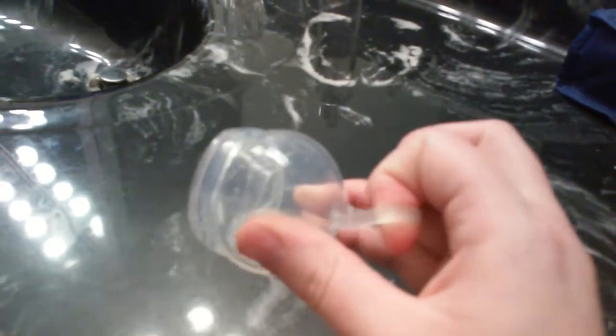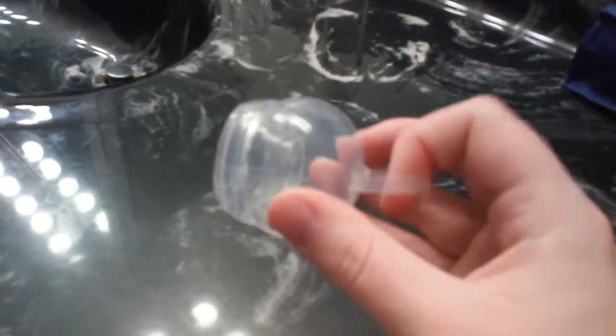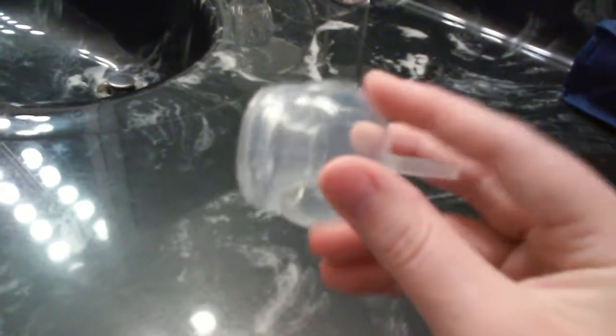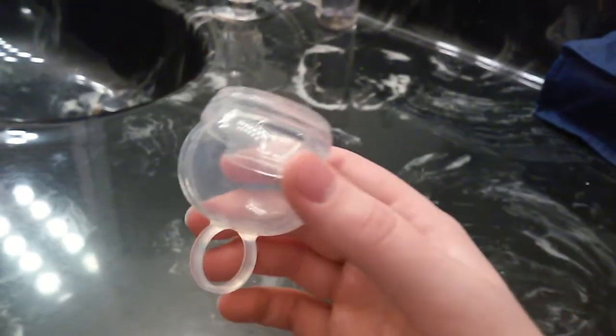It has an interesting removal ring as it has this hoop to remove it. But don't try to use this hoop just on its own to remove it. You still have to slide your finger up, break the suction, and then you can use the hoop to remove it. Otherwise you're going to cause yourself a lot of pain.